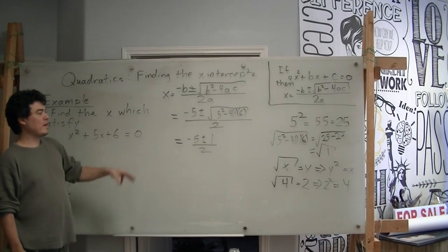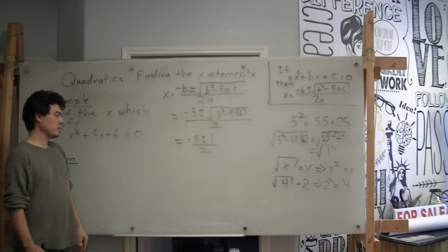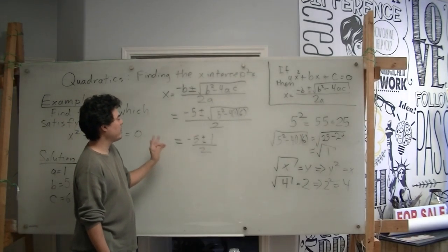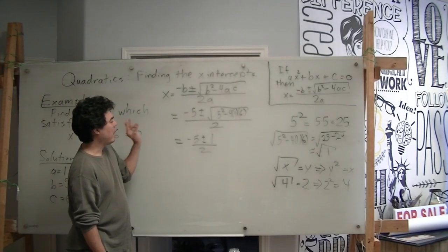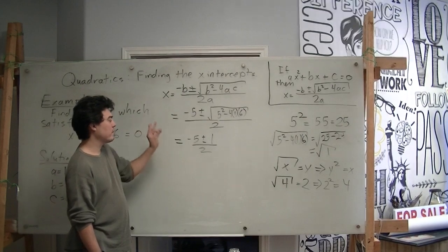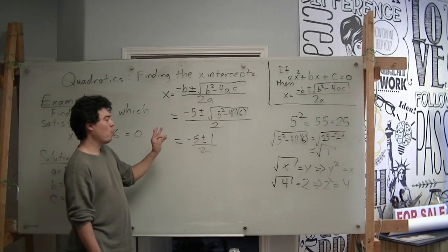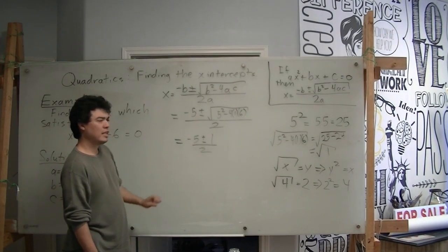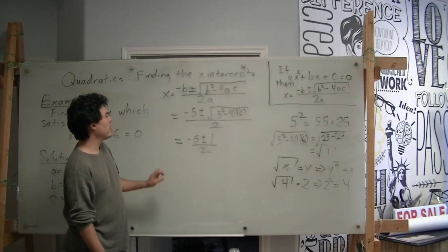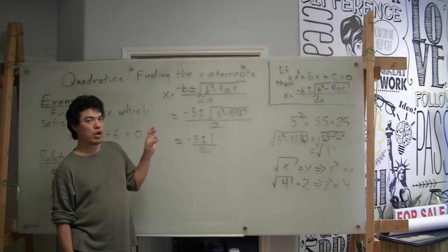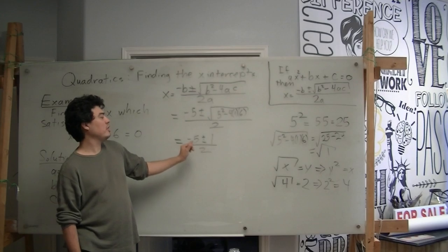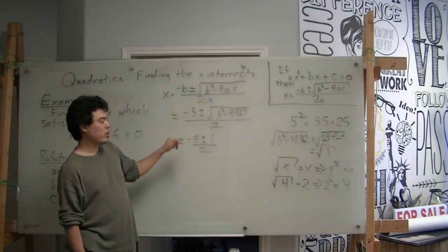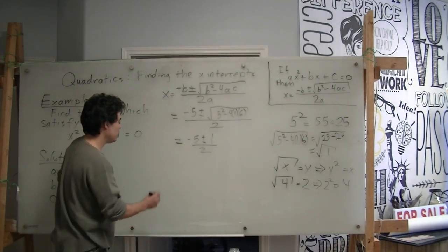So that's how I simplified that radical. And so now we have this fraction. x equals negative 5 plus or minus 1 over 2. What does this mean? This means I'm going to get one root or one x-intercept by using the plus sign, and I'm going to use one by using the minus sign.